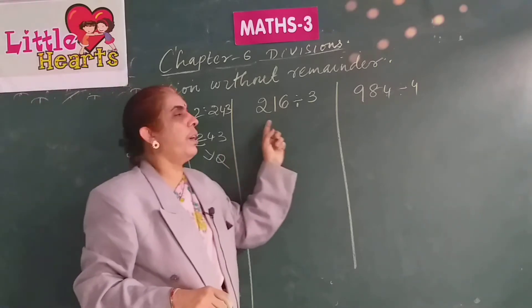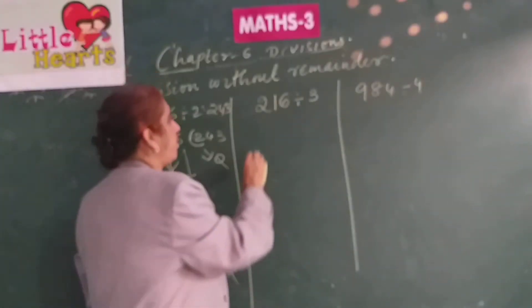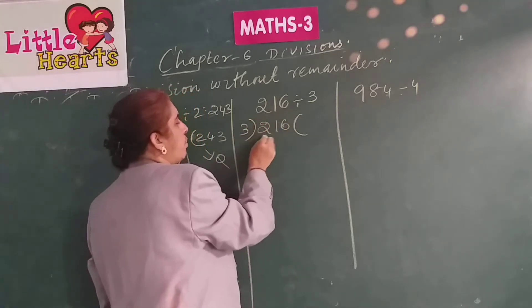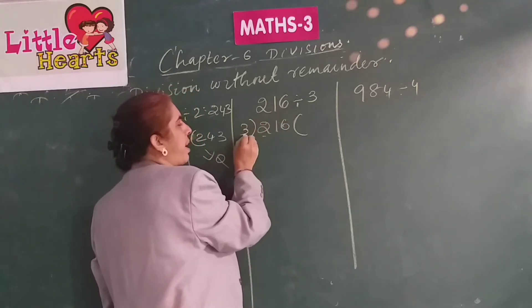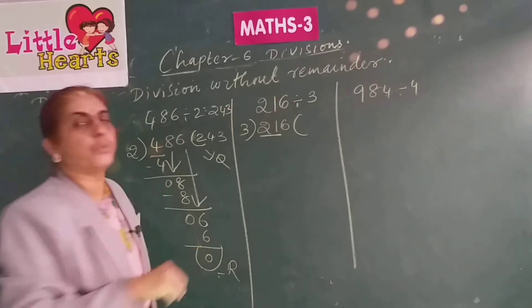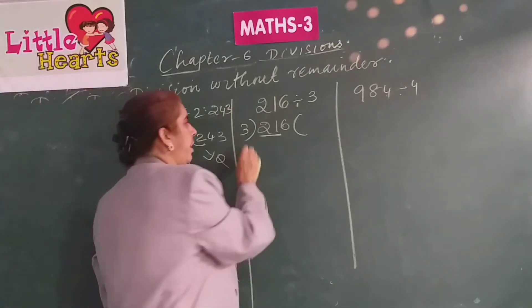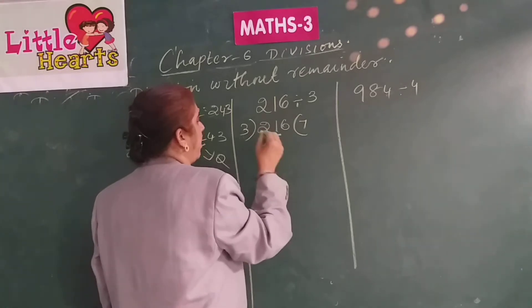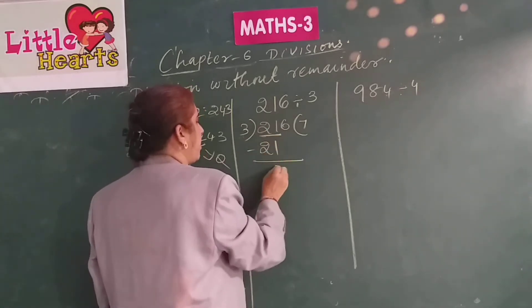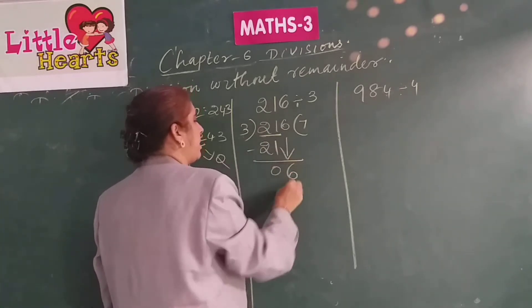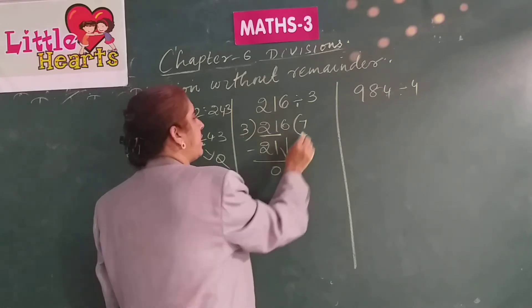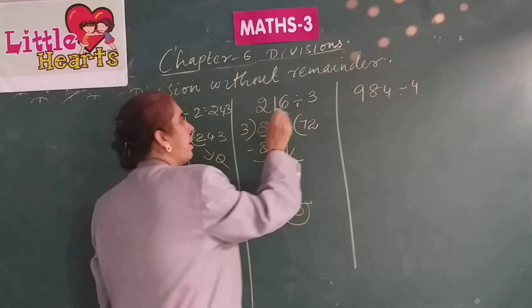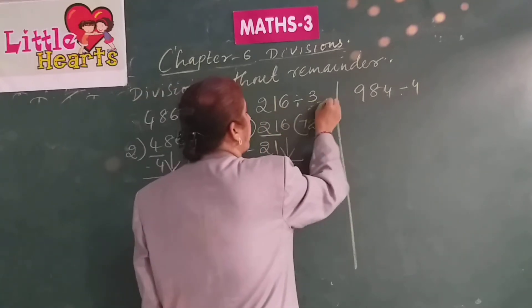Now 216 divided by 3. Here 2 is less than 3, so consider 2 digits: 21. Read 3 table until you get 21: 3 sevens are 21. 21 minus 21 is 0. Bring down 6; 3 twos are 6; 6 minus 6 is 0. The quotient is 72.